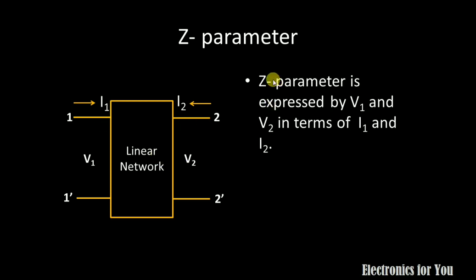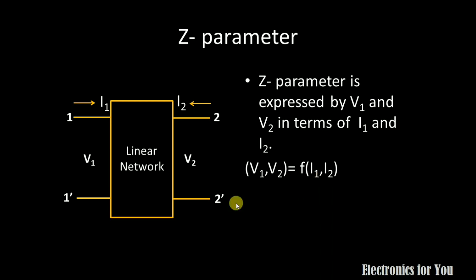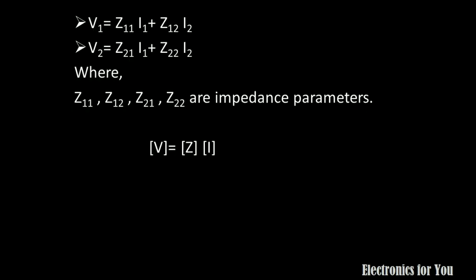If Z parameters are expressed by V1 and V2 in terms of I1 and I2, that is V1 and V2 are functions of I1 and I2, then V1 equals Z11·I1 plus Z12·I2, and V2 equals Z21·I1 plus Z22·I2. Here Z11, Z12, Z21, and Z22 are all impedance parameters.